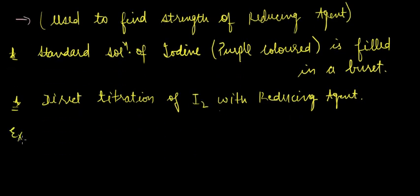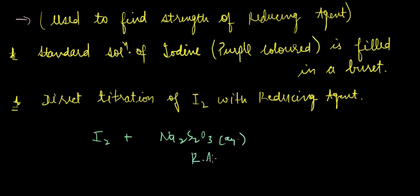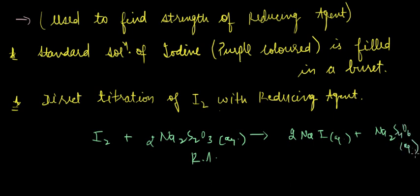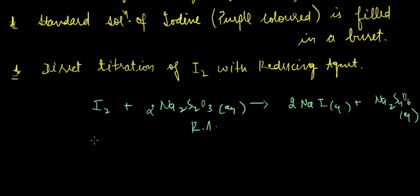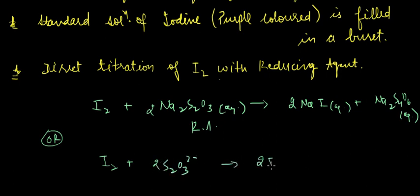The reaction is as follows — this is the direct reaction: I₂ plus Na₂S₂O₃ (aqueous, the reducing agent) gives two moles of NaI, using two moles of Na₂S₂O₃ (aqueous), and Na₂S₄O₆ (aqueous). In ionic terms: I₂ + 2S₂O₃²⁻ → 2I⁻ + S₄O₆²⁻, in which sulfur is oxidized.